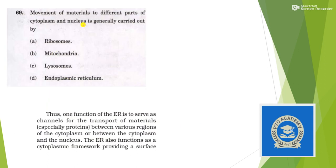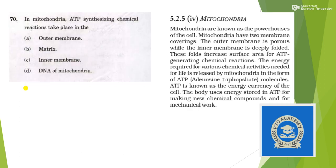Next: movement of materials to different parts of the cytoplasm and nucleus is generally carried out by? One function of the endoplasmic reticulum is to serve as a channel for transport of materials between various regions of the cytoplasm. So the answer should be option D — endoplasmic reticulum.